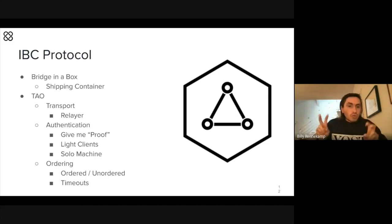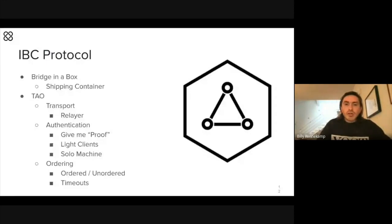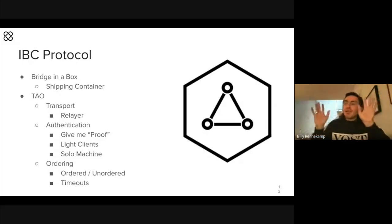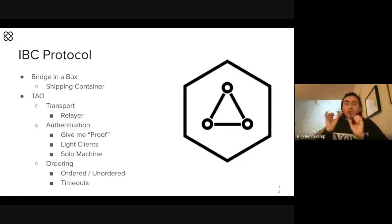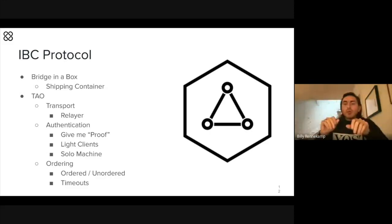Another way to prove something came from the other side is what we call a solo machine. IBC is super modular — you can swap out different pieces that have different reasons for existing. While a light client is the highest degree of integrity, there's a section on the label that says 'proof.' Typically the proof will say 'light client proof,' but you could put a different type of proof, which is called a solo machine — essentially 'I said so,' which has a lower degree of trust.